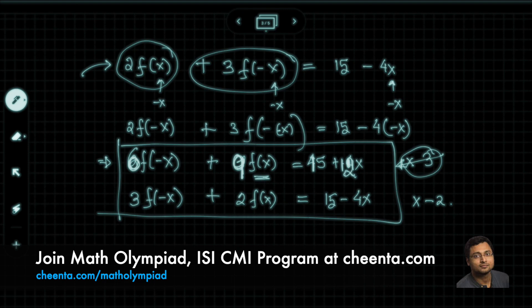If you multiply by negative 2, you get negative 6 times f(-x), negative 4 times f(x), negative 30, and positive 8x.